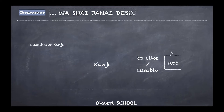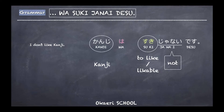When you don't like something, you use janai desu, which you've learned before as the negative form. For example: i don't like kanji — kanji wa suki janai desu. The wa here can be explained as a contrast — I may like many other things, but I don't really like kanji.